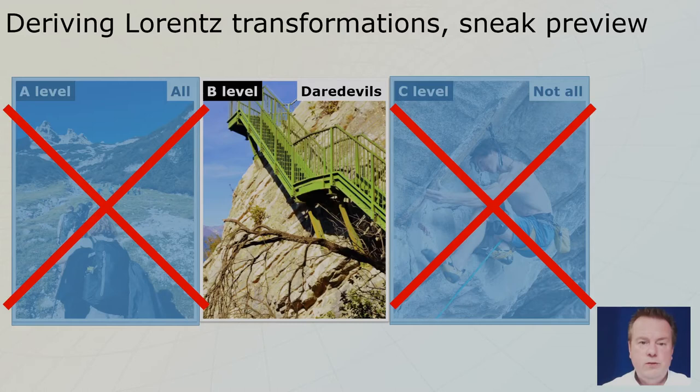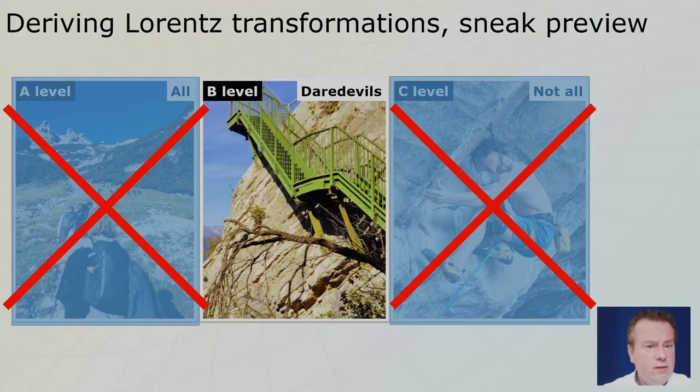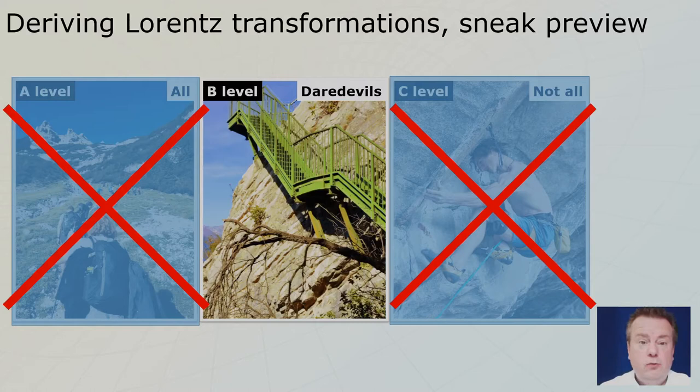What we are going to do is not derive the full Lorentz transformations — we are going to get to the Lorentz factor, the gamma, which you've seen in previous levels. It's for daredevils. We are going to do math, but it's not that difficult — I would say it's high school math. It's tedious but not difficult. If you want to be able to derive the Lorentz factor gamma, which is maybe the most mind-blowing constant in all of physics, you have to stay tuned.